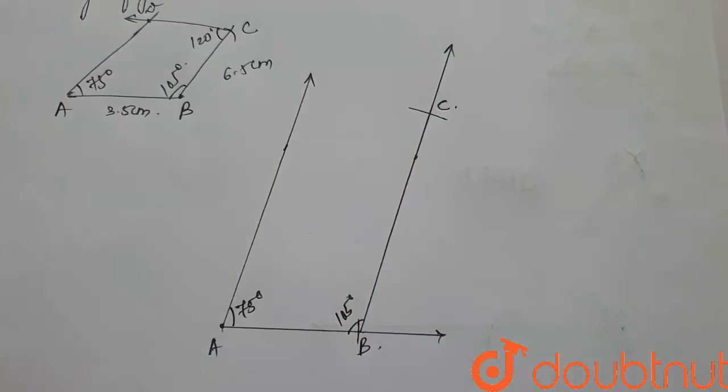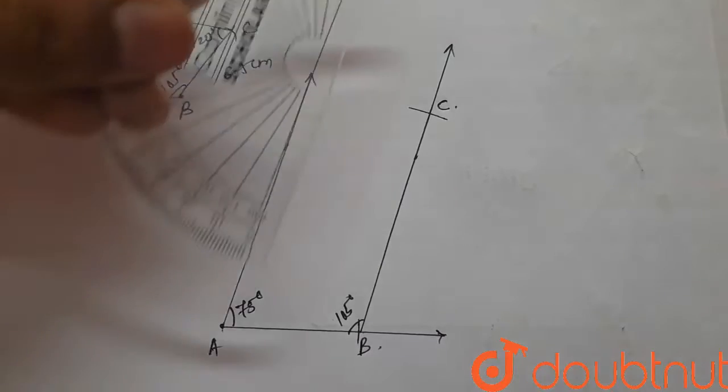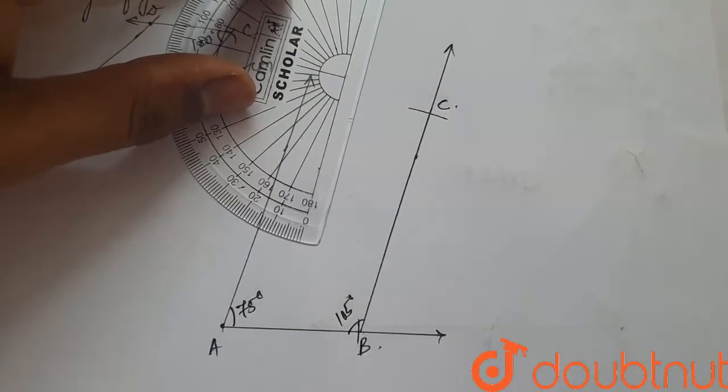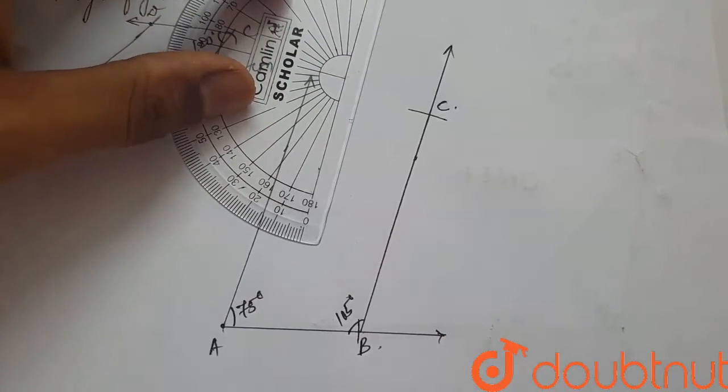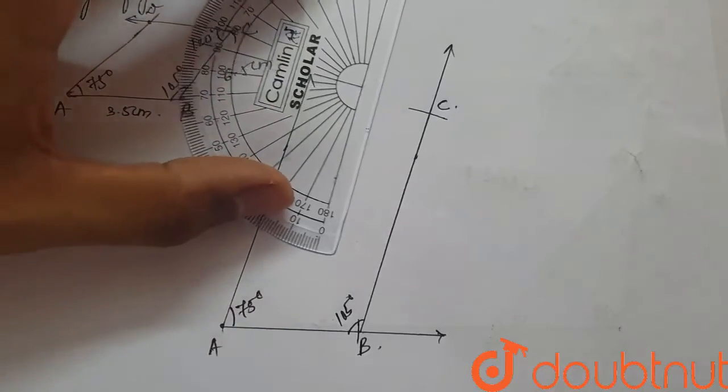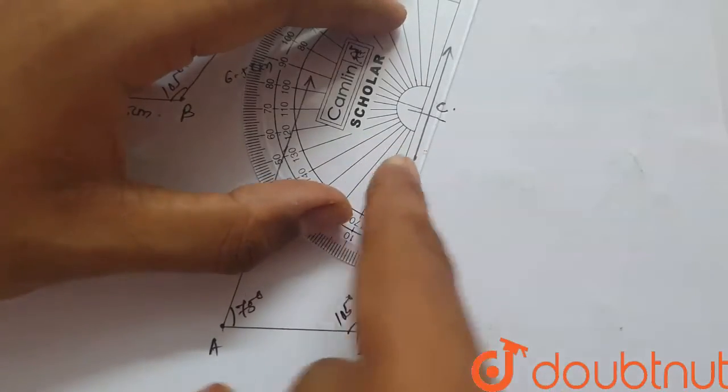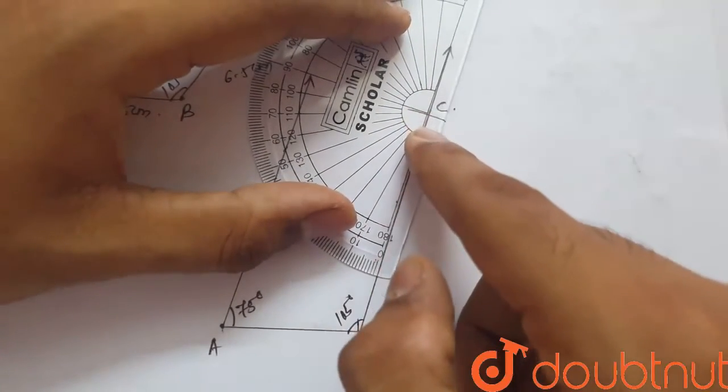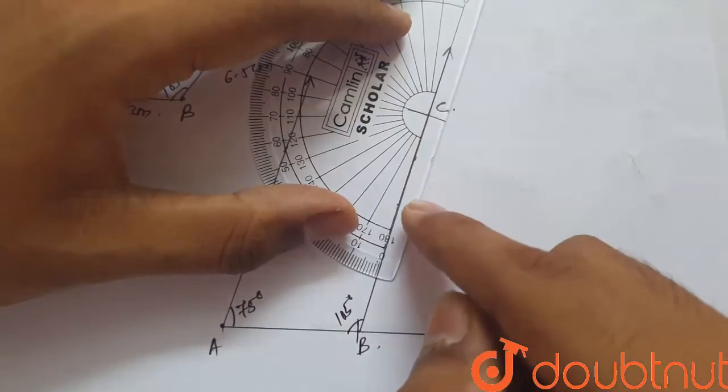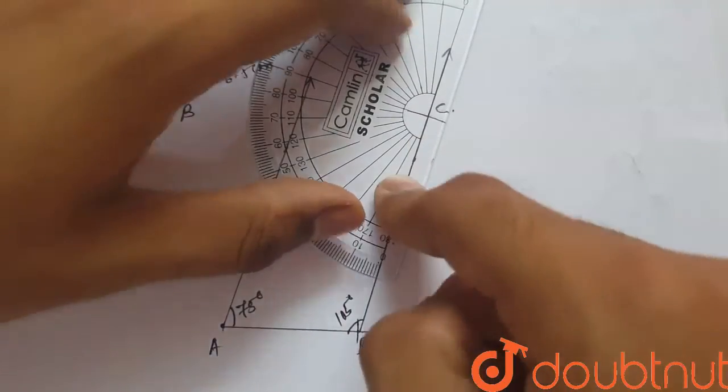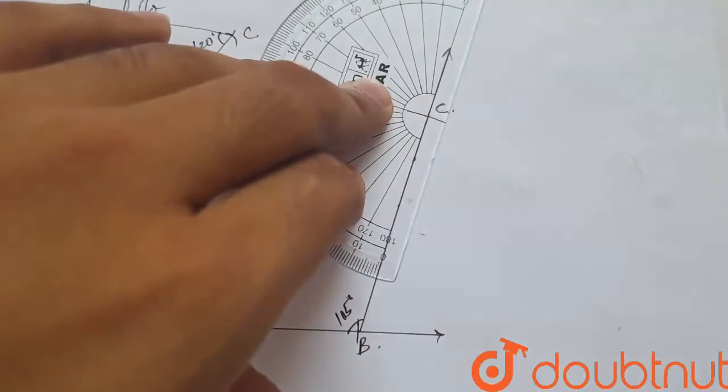Now, lastly, we know that C is 120 degrees. So, we will place the protractor properly on side BC. The protractor line will be on side BC and the point will be on point C and we'll mark 120 degrees. So, 120 degrees is here.